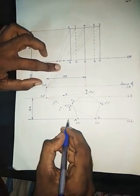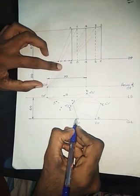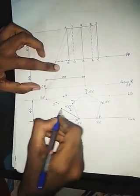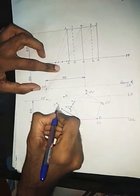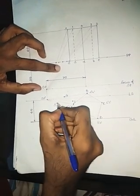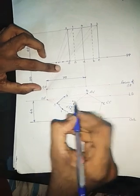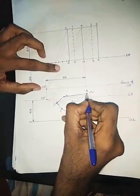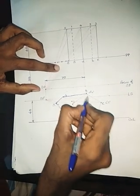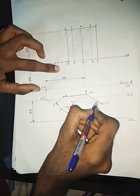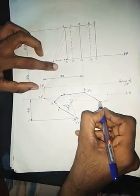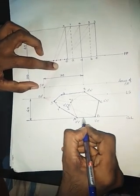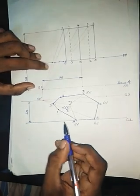Now join the outermost points. Starting from A1, then 1–5, then 5–4, then 4D, then CD, CB, and back to A. Then connect AB. These are the outermost visible edges of the perspective projection.